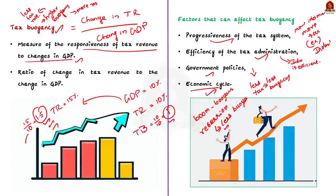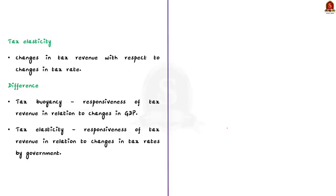Like tax buoyancy, there is another concept in economy called tax elasticity. Tax elasticity simply means the change in tax revenue with respect to change in tax rate. For example, say if the government increases tax on cars from 10 percent to 20 percent — that is a 100 percent increase in tax rate.